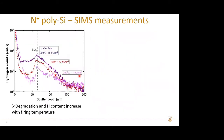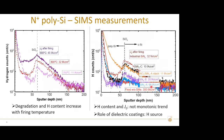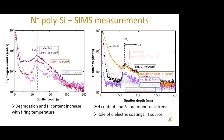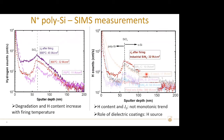We also measured hydrogen in samples fired at different temperatures. The hydrogen content near the oxide increases with firing temperature, most likely because the nitride releases more hydrogen upon higher-temperature thermal annealing. SIMS measurements were then performed on samples fired with various dielectric categories at the same temperature, showing distinct hydrogen profiles. For samples with very low hydrogen content after firing, J0 values are quite high. For samples with slightly more hydrogen, improved J0 was observed. However, the sample with the highest hydrogen concentration has poor surface passivation.